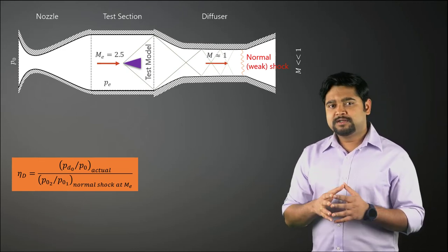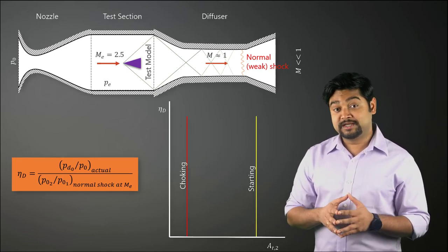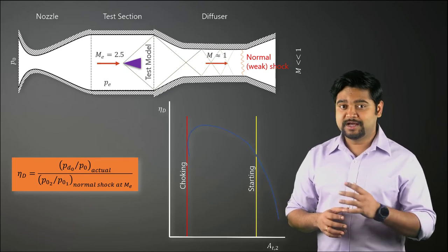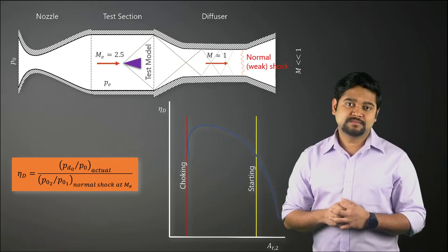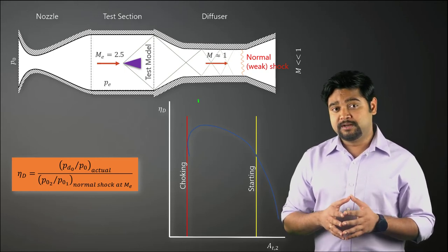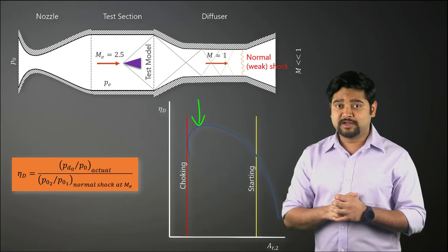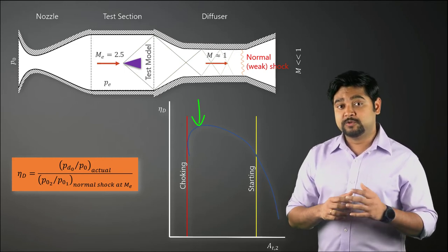For typical supersonic diffusers, the efficiency is very sensitive to the second throat area AT2 as shown here. As we can see, the peak efficiency is obtained for a value of AT2 slightly larger than the value AT2 star obtained using this expression.